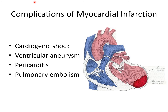Less common complications of myocardial infarction include cardiogenic shock—complete heart pump failure—and ventricular aneurysm, which is an outpouching of the ventricular wall. When the ventricular wall becomes very thin, blood becomes stagnant and can cause a thrombus or blood clot to form in the left ventricle. Other complications include pericarditis and pulmonary embolism. The most common complications to remember are dysrhythmias and heart failure.